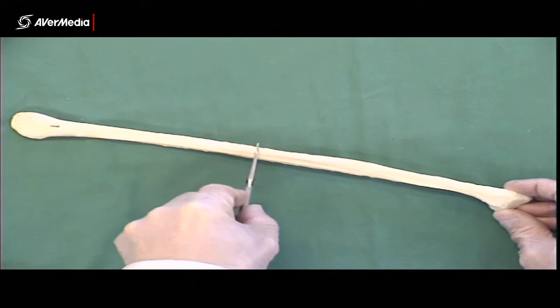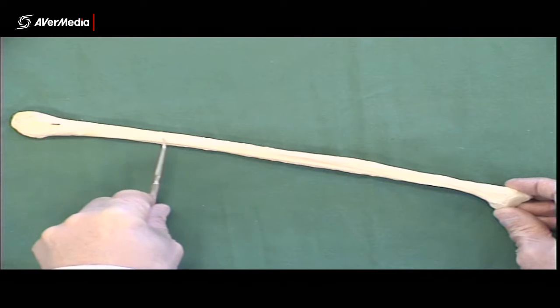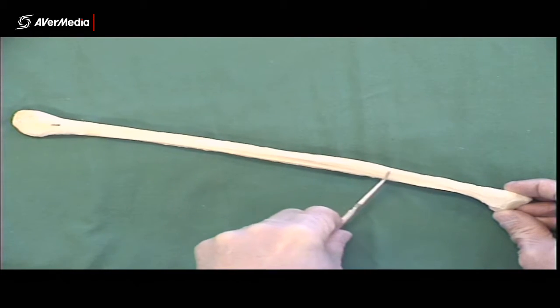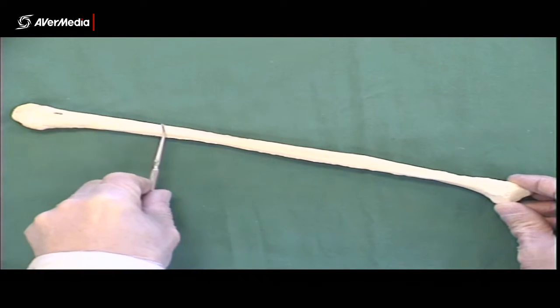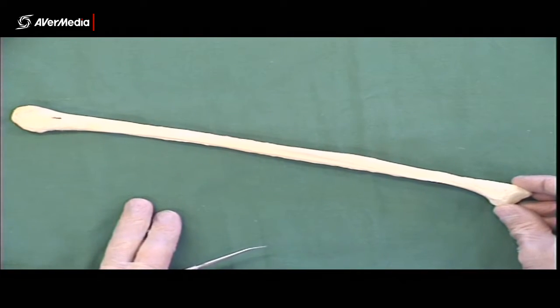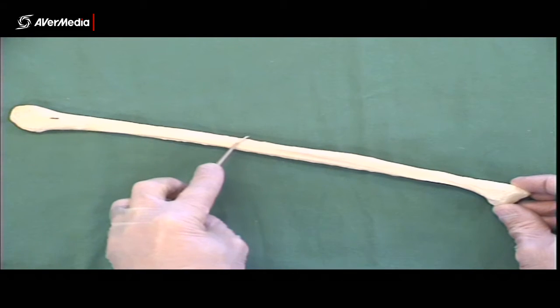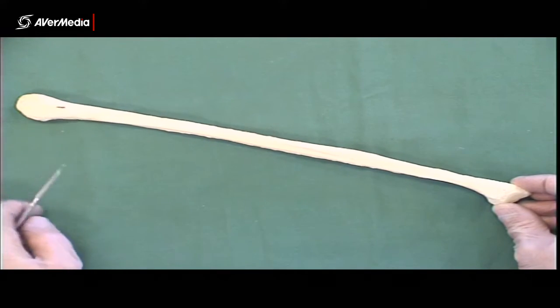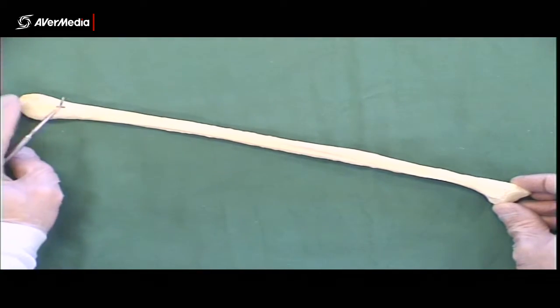And so on the medial aspect, pointing towards the tibia, we have an interosseous border. So you could tell me, hopefully, if there's just a fibula sitting on the bench, you could tell me head, interosseous border, lateral malleolus. I would expect that you could do that.